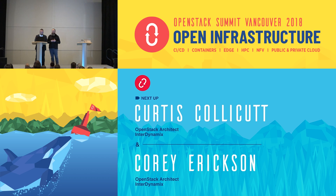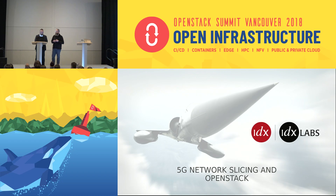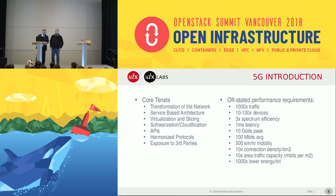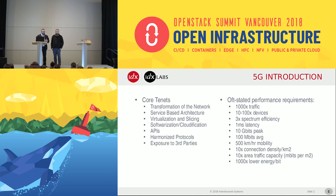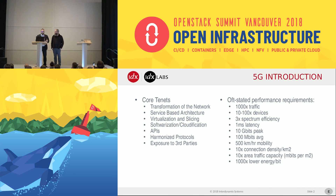We've had a lot of talk about edge computing and what that's going to bring. We're about to see one of the largest transformations of the network to date. We're going to see virtualization and slicing becoming more predominant as we support these edge use cases going forward. We've heard talk about needing a standardized API so we can control components of the network that aren't necessarily ours — a way to communicate with other network providers through harmonized protocols and exposure to third parties.